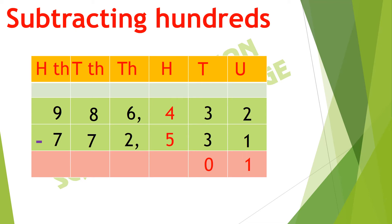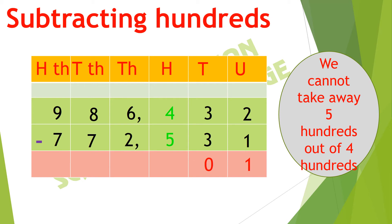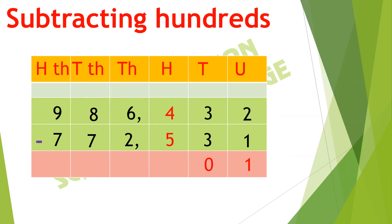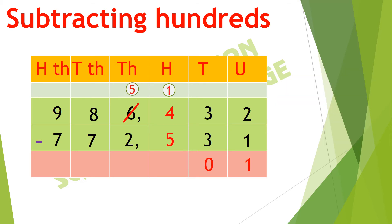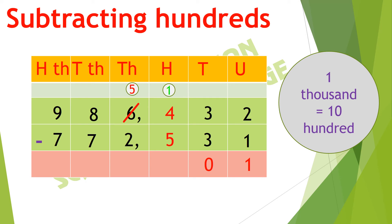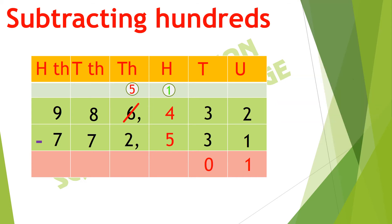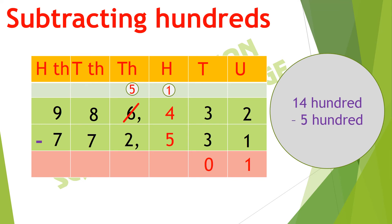After the tens, we move towards the hundreds. We have to subtract 5 hundreds out of 4 hundreds, but we cannot take away 5 hundreds from 4 hundreds. So we take a borrow from thousands — out of 6,000 we take 1,000 borrow, and are left with 5,000. Since 1,000 equals 10 hundreds, the 10 hundreds borrowed plus the existing 4 hundreds gives 14 hundreds. Out of 14 hundreds we can easily subtract 5 hundreds.